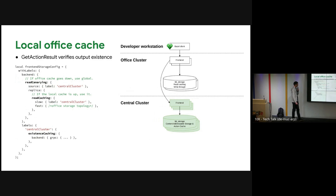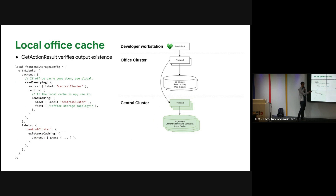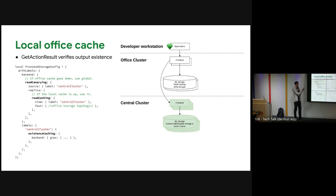On top of this, when you look for action results — checking for a cache hit in Bazel via the GetActionResult message — when you respond saying you have a cache hit, Bazel expects that all the blobs are actually located and readable from storage. But we don't need to transfer all blobs when we do build-without-the-bytes. So we add an existence caching part on the local disk so we don't have to ask the central cluster if all these blobs exist all the time. That speeds up all cache hit checks significantly.